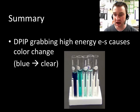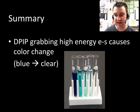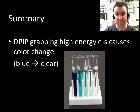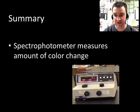Whereas DPIP that has grabbed high-energy electrons is more clear. So basically, what we can do in this lab is define photosynthetic activity as a gradual color change from dark blue to clear. And we have a way of measuring just how much the color has changed with our spectrophotometer machines.